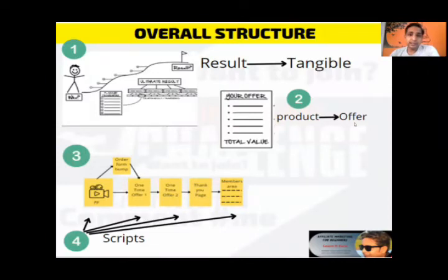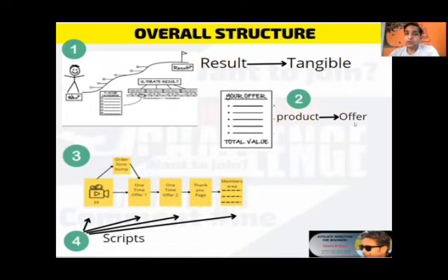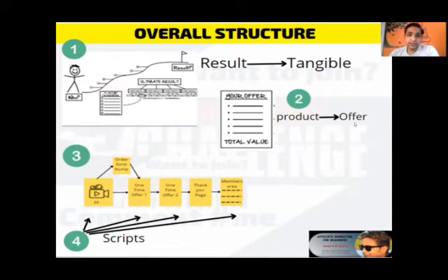As of now, whatever we have learned can be divided into four steps — this is the overall structure. In step number one we learned about who our customers are, what result they want, and what steps are needed to get that result. We used frameworks like the flagship framework. In step number two we converted our product into an offer — an offer that nobody can deny. In step number three we created our sales page, which included the flagship framework, the order form bump, OTO1, OTO2, the thank you page, and the members area. Now in step number four we are working on the scripts to create all those pages.